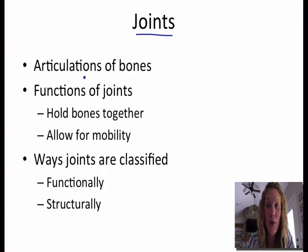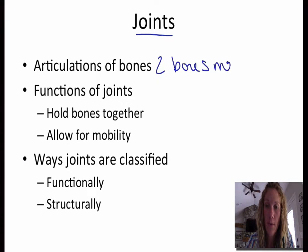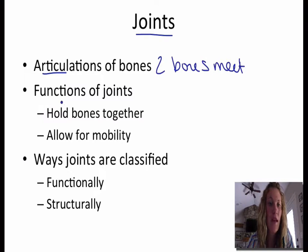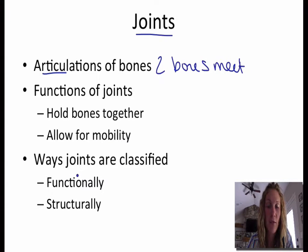Joints are an articulation of bone — really that's just another way of saying that a joint is where two bones meet. The function of joints is to hold bones together and to also allow for mobility. There are a couple of different ways that joints are classified: first functionally, and second structurally.